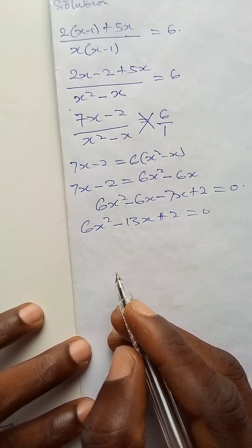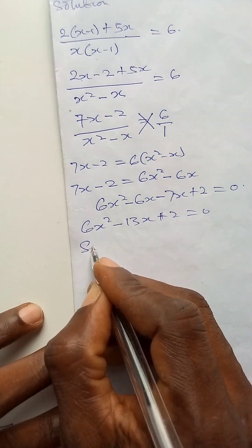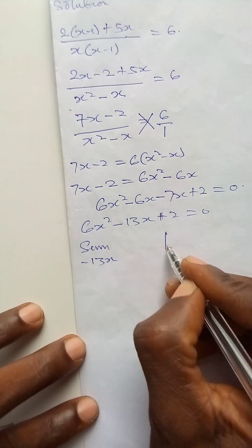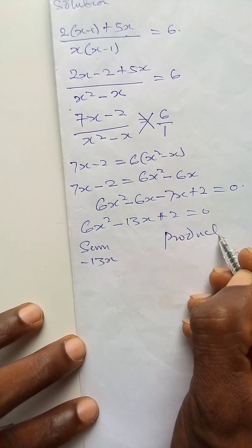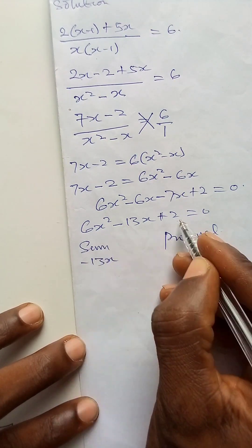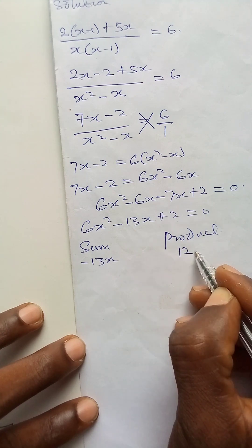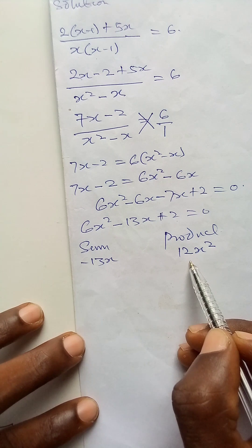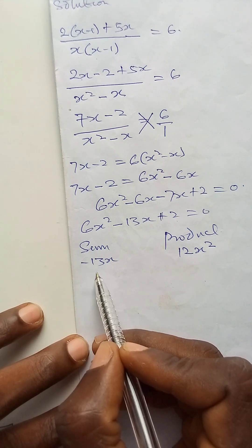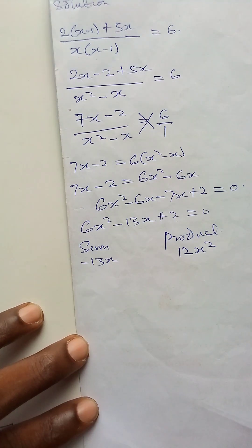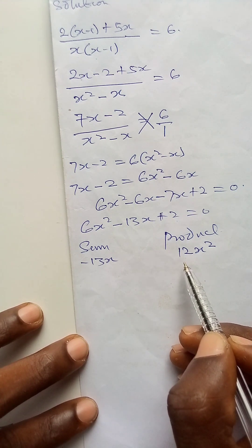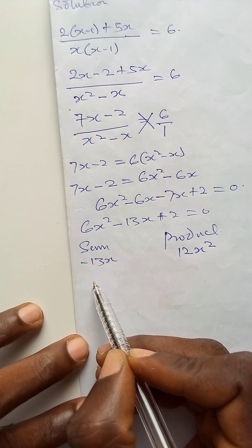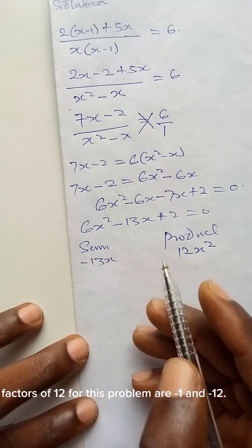Let us use factorization method in this. So we will now have the sum as minus 13x and the product as 6x squared times 2 giving us 12x squared. So we will look for factors of 12 that when we add them together give us minus 13. Those factors are minus 12 and minus 1.